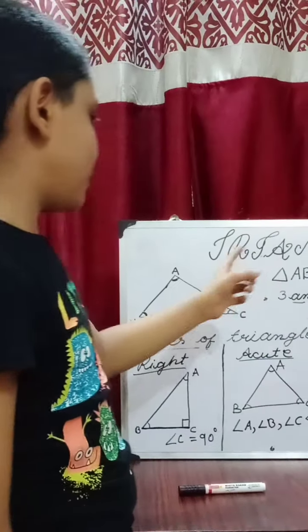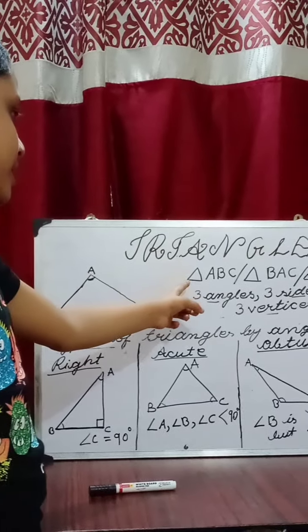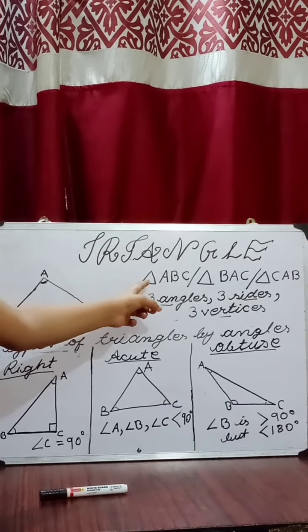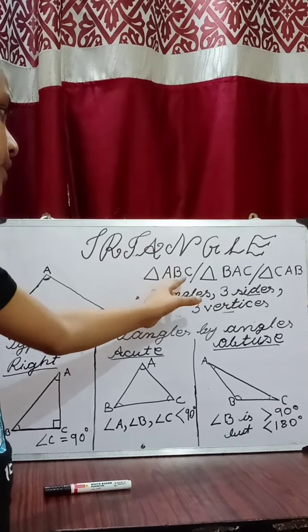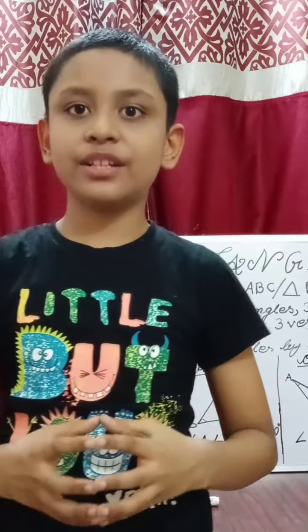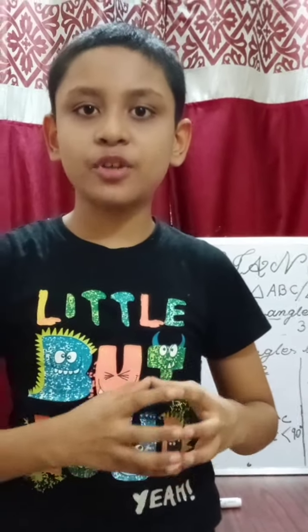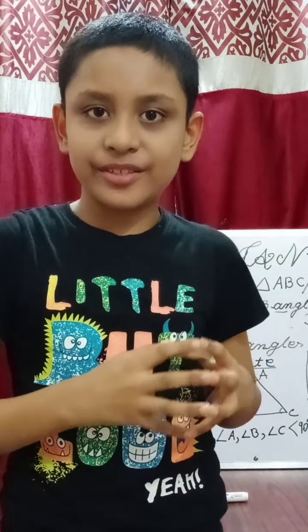Now let's review what we learnt today. Today we learnt what is a triangle, what is the symbol for a triangle and how to write a triangle. We also learnt the types of triangles by angles and by sides. Thank you.